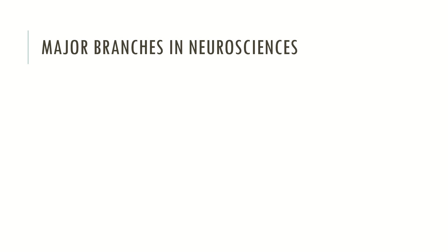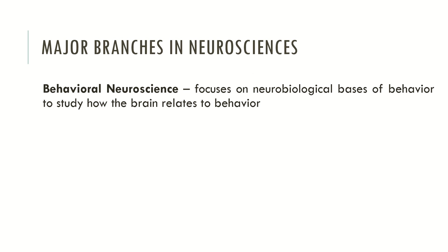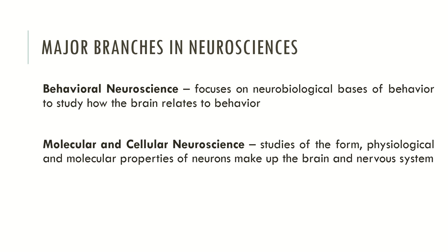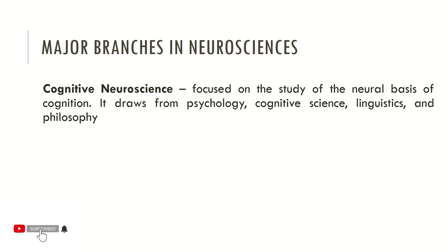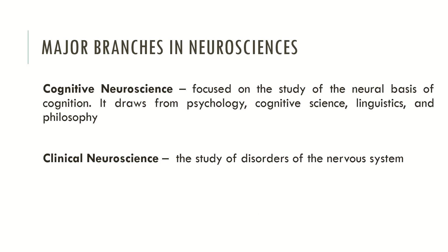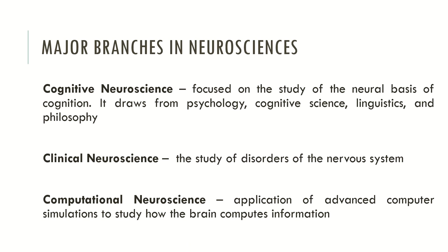Now let's look at the major branches of Neurosciences. Behavioral Neurosciences focuses on the neurobiological basis of behavior to study how the brain relates to specific behaviors. Molecular and Cellular Neurosciences studies the form, physiological and molecular properties of neurons and how they make up the brain and nervous system. Affective Neurosciences explores how neurons and complex neural networks behave in relationship to emotions and affective processing. Cognitive Neurosciences focuses on the neural basis of cognition, drawing from psychology, cognitive science, linguistics and philosophy. Clinical Neurosciences is the study of disorders of the nervous system, and Computational Neurosciences is the application of advanced computer simulations to study how the brain computes information.